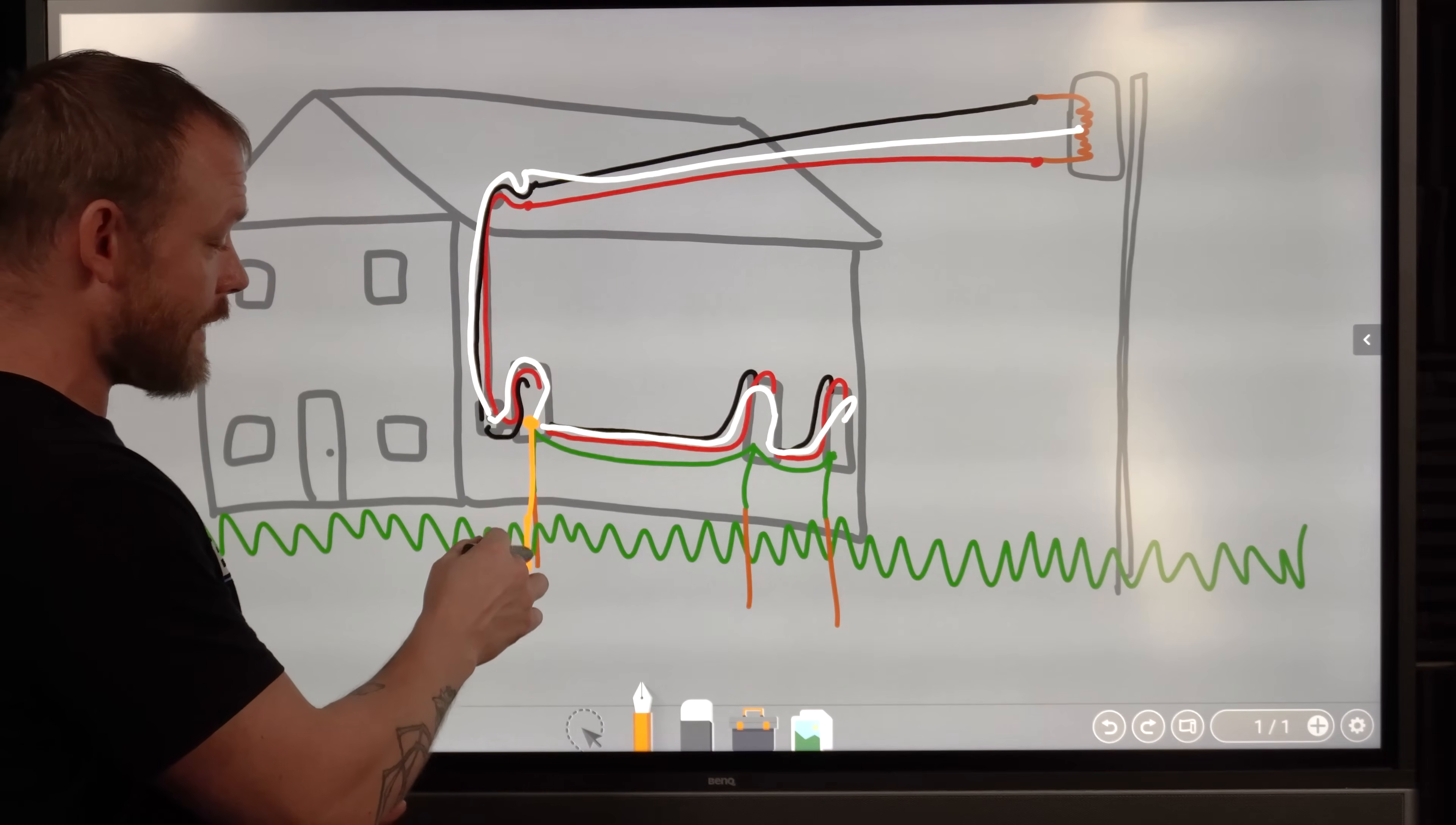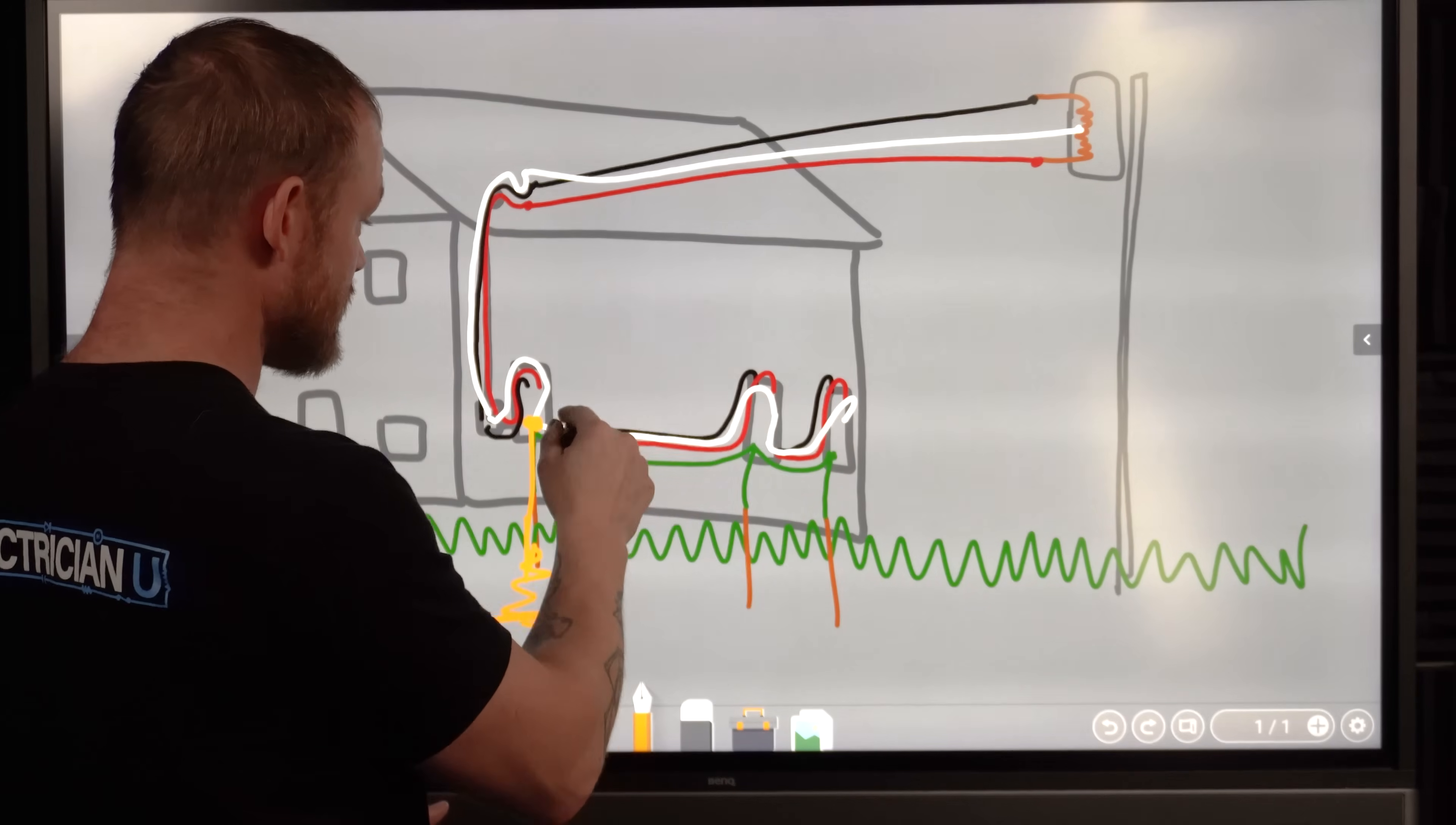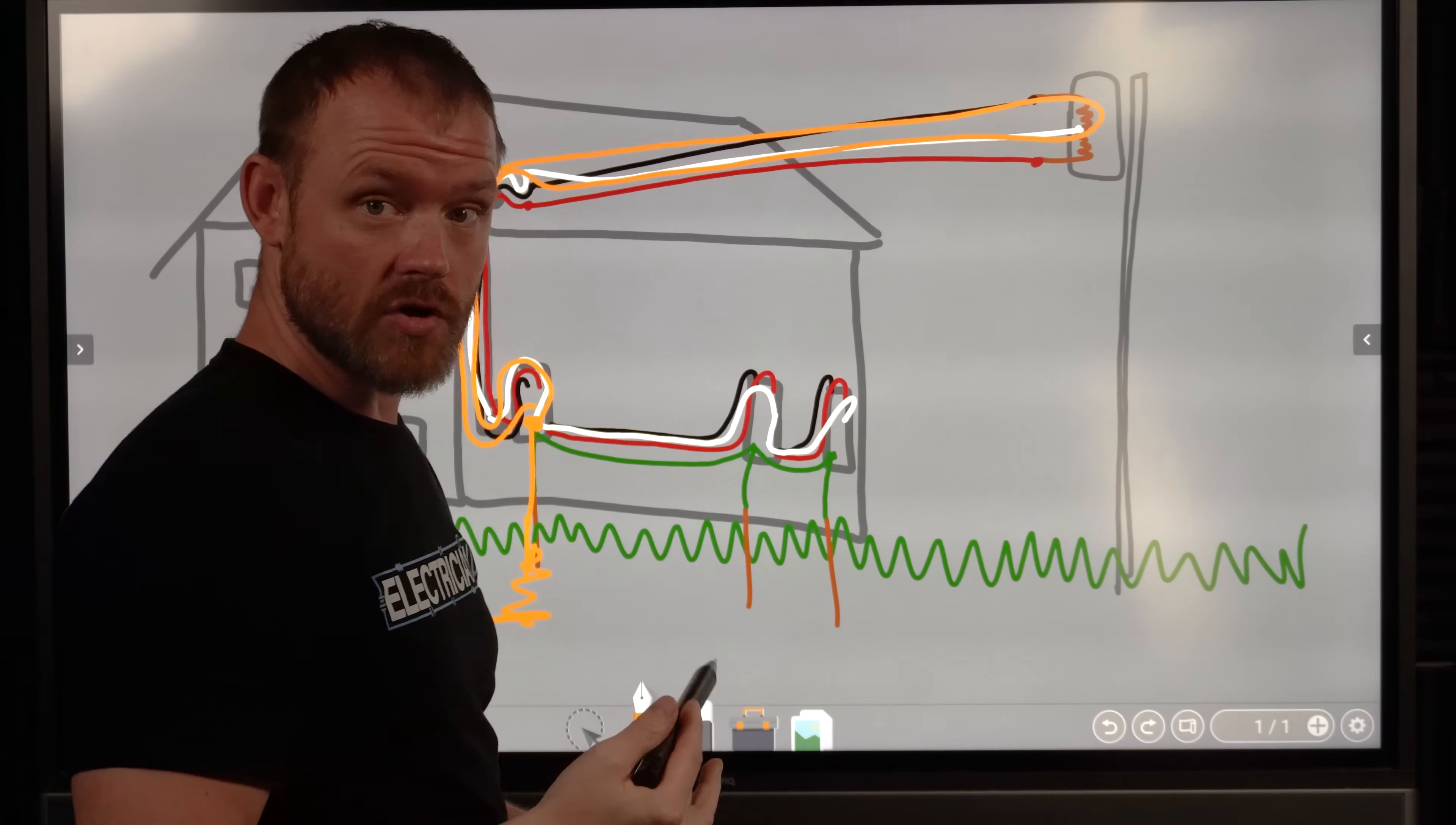But in this case, we have a ground rod that's connecting the rest of the premises wiring system to earth and we're bonding the neutral. All neutrals need to go back to the main neutral so that we can complete a circuit if we have a fault and that'll actually trip a breaker.